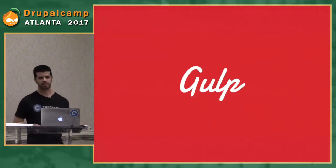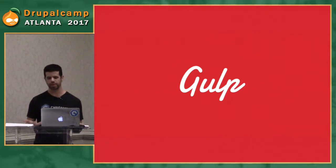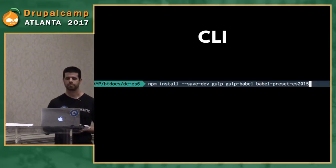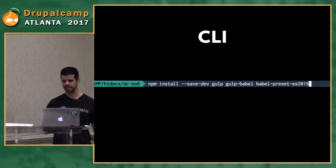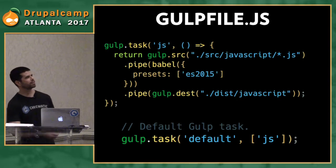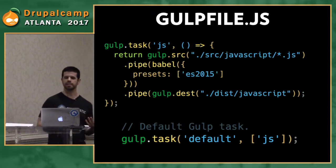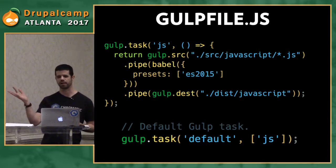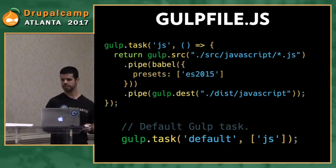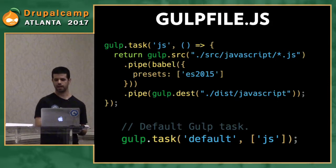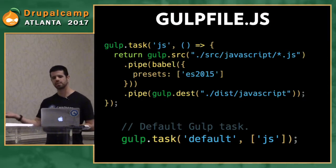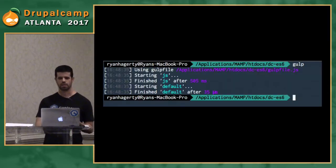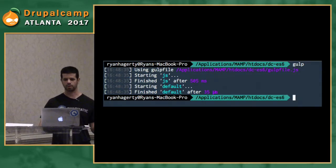I use Gulp in the repo because a lot of people are familiar with it. Installing: gulp-babel and babel-preset-es2015 — that's all you need. I have a very basic task called 'js': tell Gulp to use my JavaScript source file, pipe it through Babel with the preset of ES2015, and pipe it into my destination distribution JavaScript folder. Type gulp, boom — you've got ES5 code.